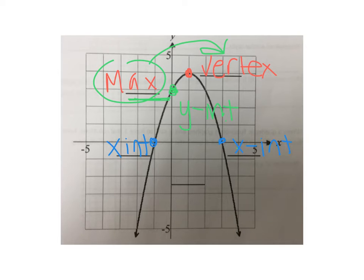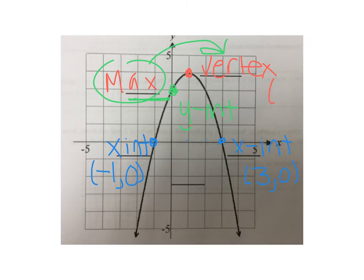Include both the word and the ordered pair for each feature. The x-intercepts are at (3, 0) and (negative 1, 0). The vertex — which is the max — is at (1, 4). The y-intercept is at (0, 3). Remember: at an x-intercept y is always 0, and at a y-intercept x is always 0.